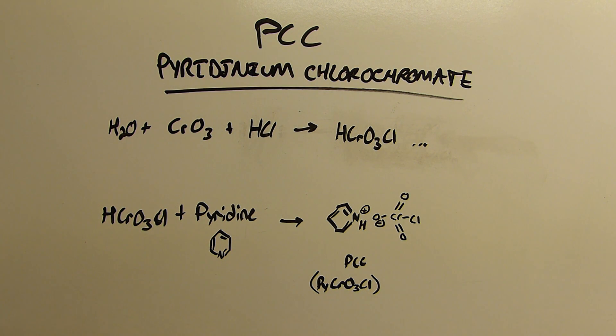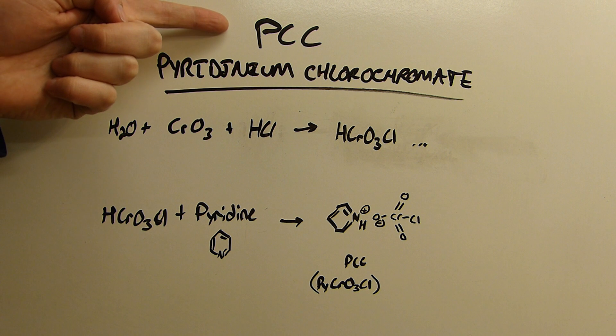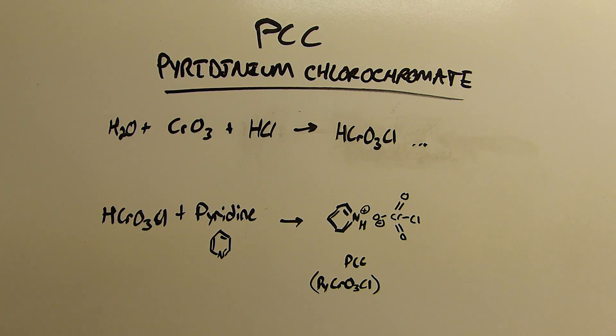Hi everyone and welcome back to the lab. In this video I'll be making a compound called pyridinium chlorochromate or PCC for short. It is the quintessential textbook method for oxidizing alcohols to aldehydes without over-oxidizing them to carboxylic acids like potassium permanganate might do.